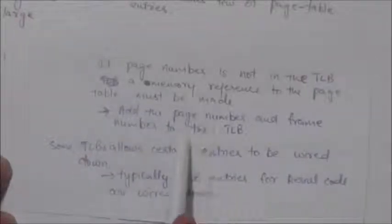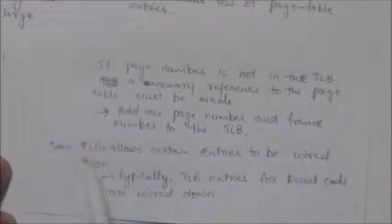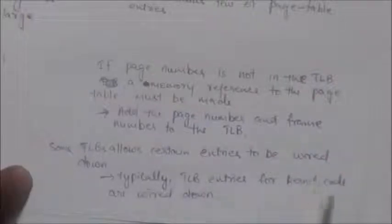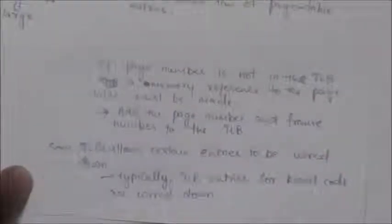When entries are wired down, it means these entries cannot be removed from the TLB. Typically, TLB entries for kernel code are wired down.